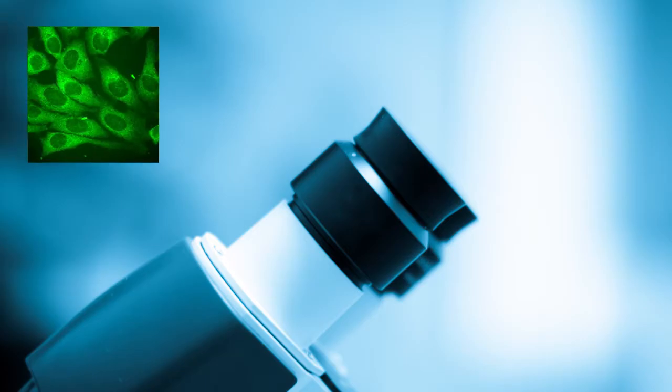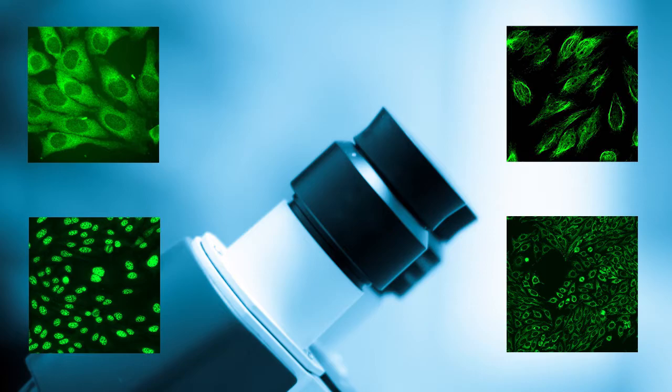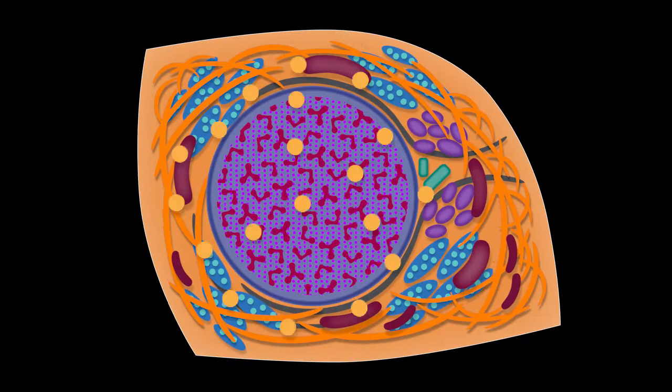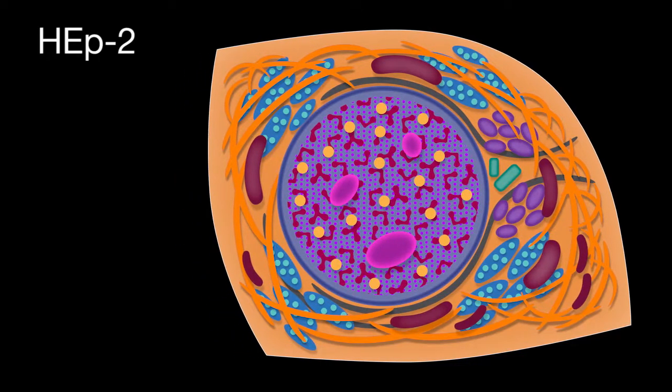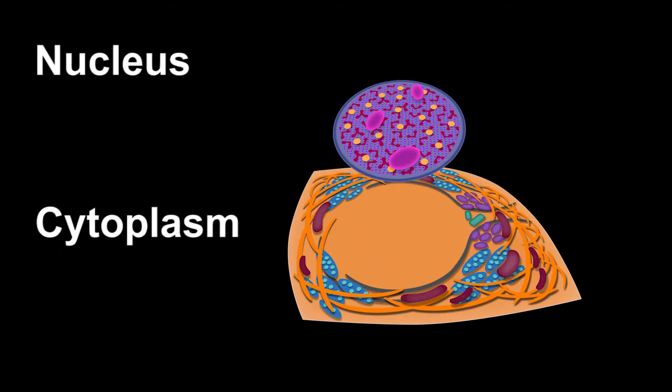HEP2 cells are tissue culture cells that are commonly used as a substrate for ANA testing. Understanding the basic structure of the HEP2 cell can help with pattern recognition when reading ANAs. There are two compartments in the cell: the nucleus and the cytoplasm.